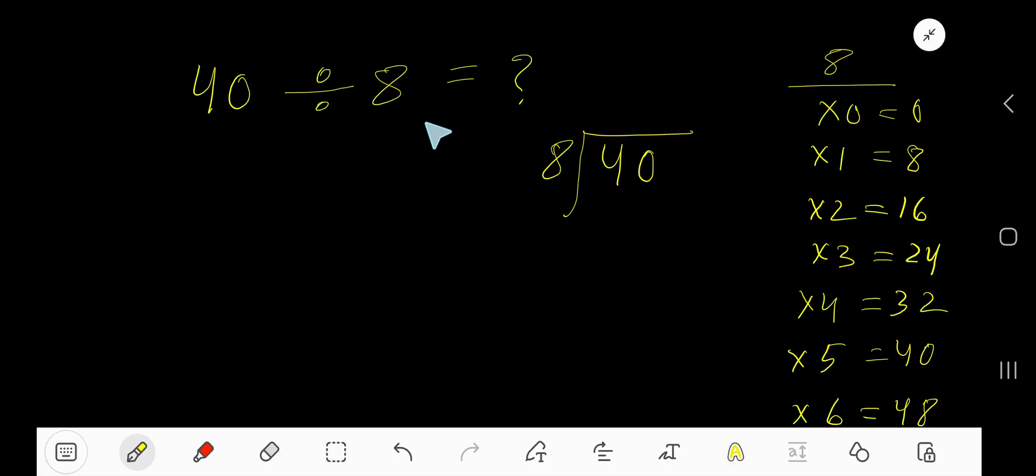40 divided by 8. Here 8 is the divisor, so we need the multiplication table of 8. 8 times 0 is 0, 8 times 1 is 8, 8 times 2 is 16, 8 times 3 is 24, 8 times 4 is 32, 8 times 5 is 40.